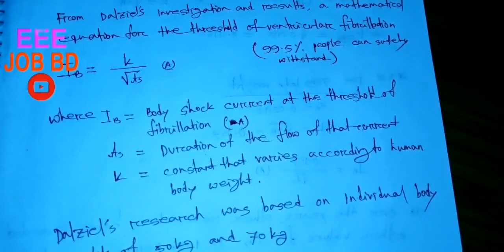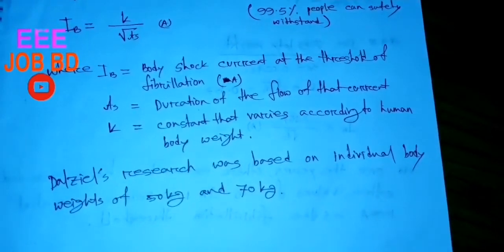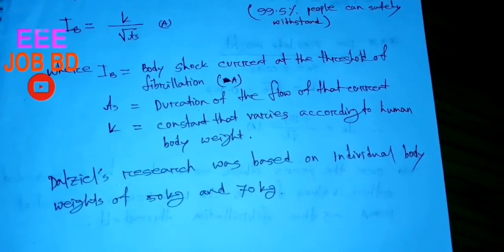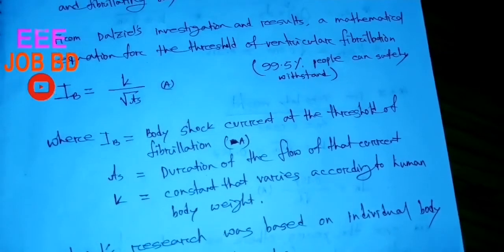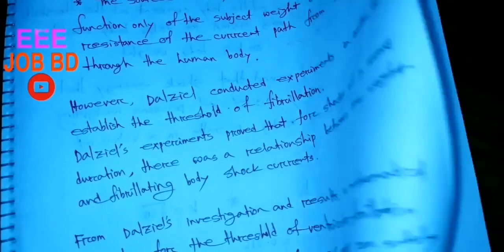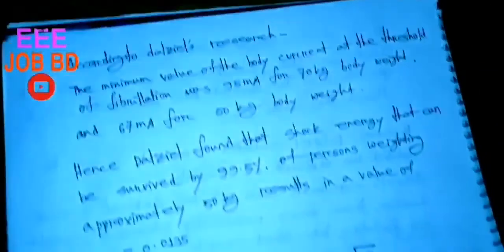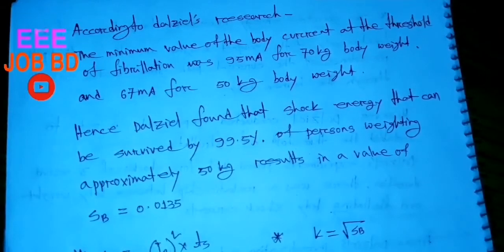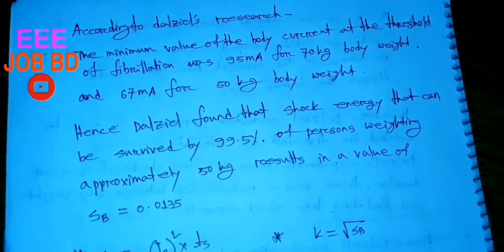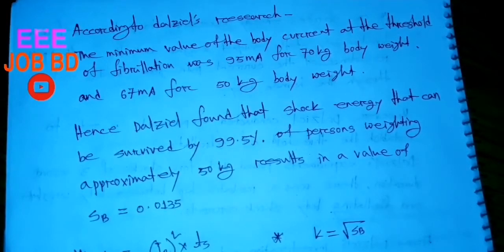We consider how much allowance is needed. According to Dalziel's research, the minimum value of body current at the threshold of fibrillation was 95 mA for a 70 kg body weight, and 67 mA for a 50 kg body weight. Dalziel used the current value of 67 mA for 50 kg body weight, which is very conservative.